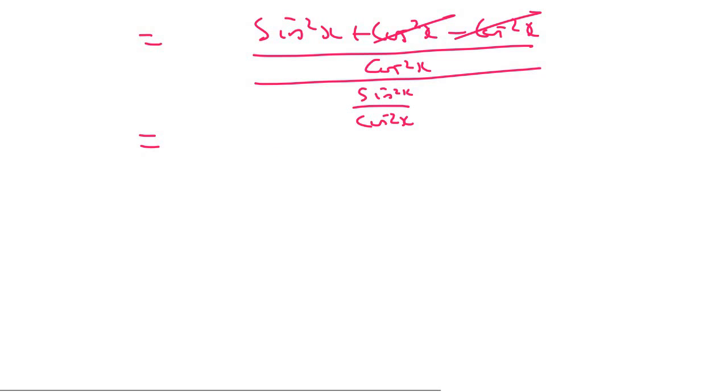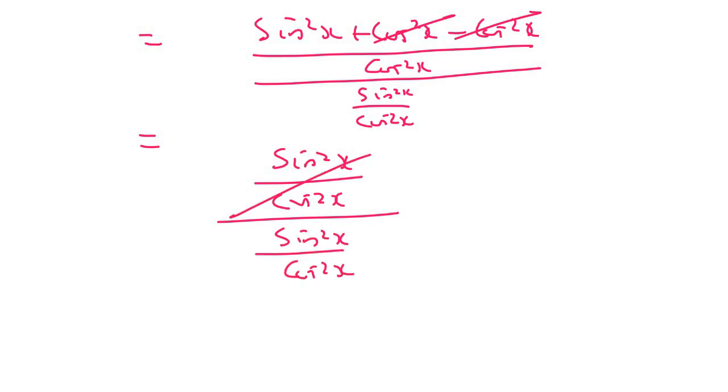What we get left with is sin²x over cos²x over sin²x over cos²x. So this whole part cancels, and our final answer is 1.